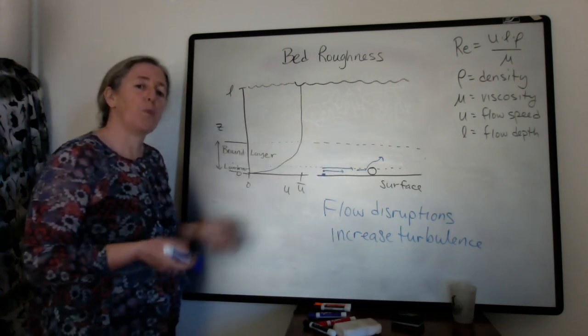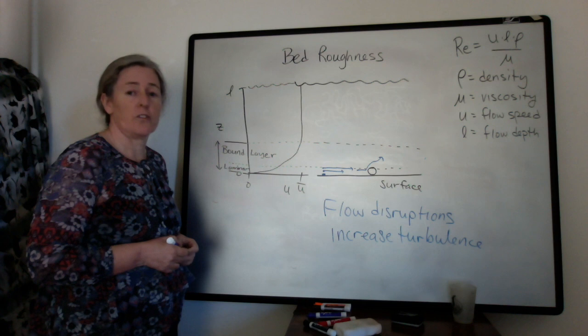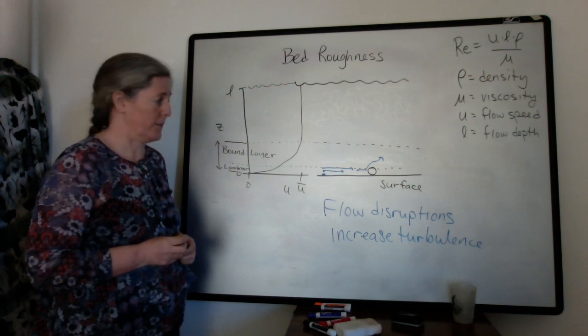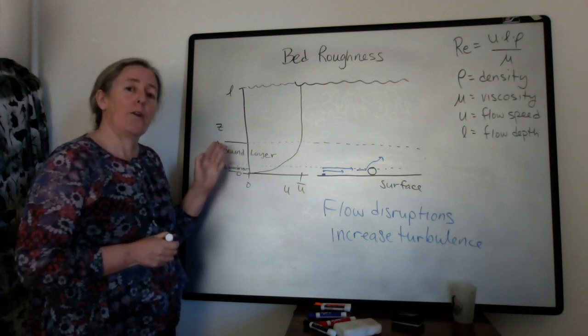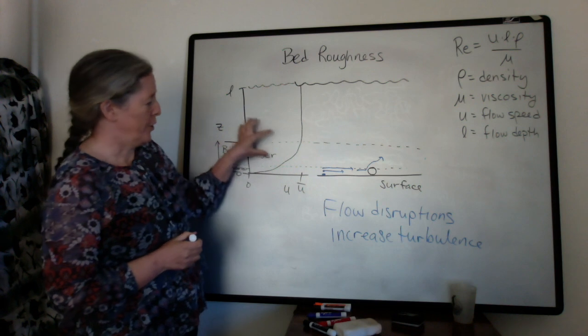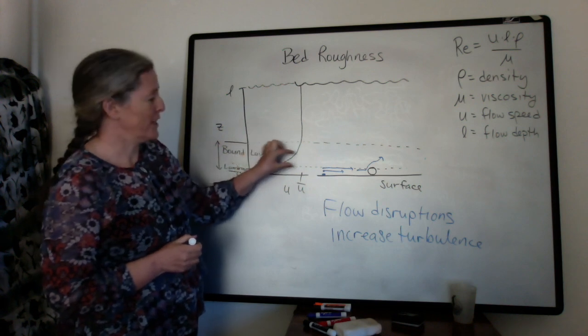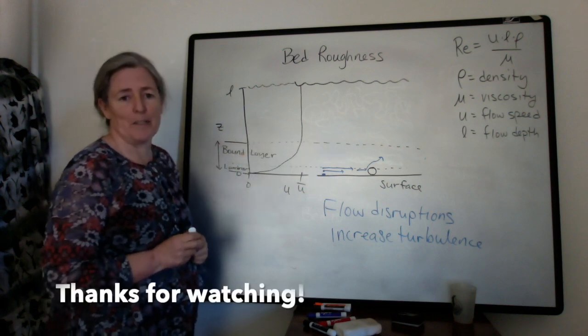The flow will be more turbulent than as described by the Reynolds number. And when you have more turbulence, your boundary layer tends to shrink, and you can get more sediment transport.